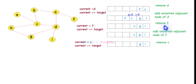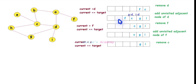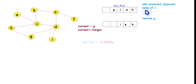Remove F from the queue and check whether it is the target node — no. Continue the BFS operation. Find all unvisited adjacent nodes of F — none, because the adjacent nodes of F are already visited, so no need to add to the queue. Move on: remove C from the queue and check whether it is the target node — no. Find all unvisited adjacent nodes of C, which are E and H. Their parent node is C; add them to the queue and mark as visited.